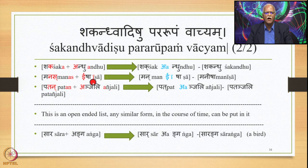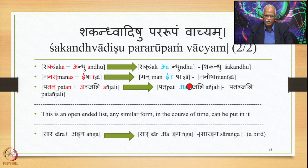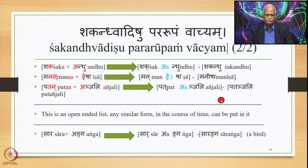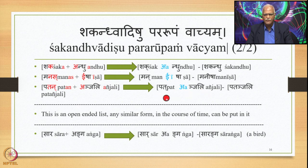Similarly, Manas plus Isha: the T part of Manas is As, followed by E. In place of both, we substitute the Pararupa, namely E. So we have Man + E + Shah, giving Manishah. Similarly, Patan plus Anjali: An is the T part of Patan followed by A. In place of both we substitute the Pararupa A. So we have Pat + A + Jali, giving Patanjali.